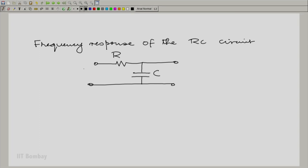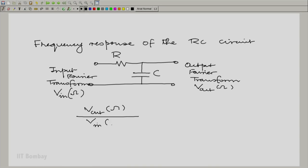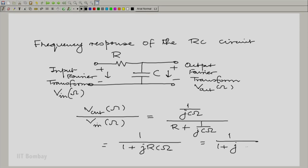We could find the impulse response and take the Fourier transform or we could look at the input and the output phasors and find their ratio. Of course, we are talking about the input and output voltages here. That is what we mean by the input and the output.